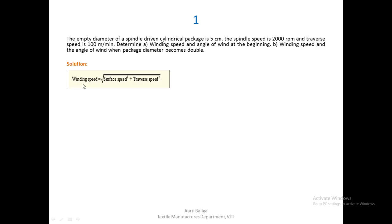We know the formula of winding speed which is equal to the square root of surface speed squared plus traverse speed squared. Surface speed can be calculated by pi × d × n, which is given as 5 centimeters diameter and 2000 rpm spindle speed. Dividing by 100 to convert to meters per minute, we get the surface speed as 314 meters per minute.